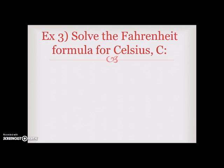Let's move on to example 3. Solve the Fahrenheit formula for Celsius C. So here is the formula to represent Fahrenheit F. F is equal to 3 fifths times C plus 32. And the goal here is to solve for C. So the first thing you want to do is subtract 32 from both sides because you want to get C by itself. So the 32s will cancel and you are left with F minus 32 is equal to 3 fifths C.